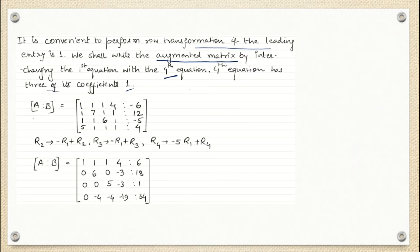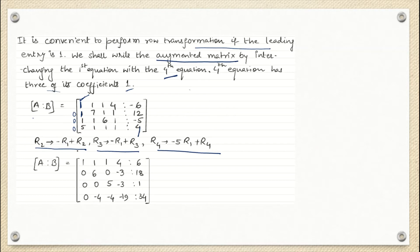It is always better to interchange row one with row four, because then I will have one in three places. Keeping the lesser value in the first row makes calculation easier. After interchanging row one — including the augmented column — I perform row transformations to make these three entries zero below the leading one.